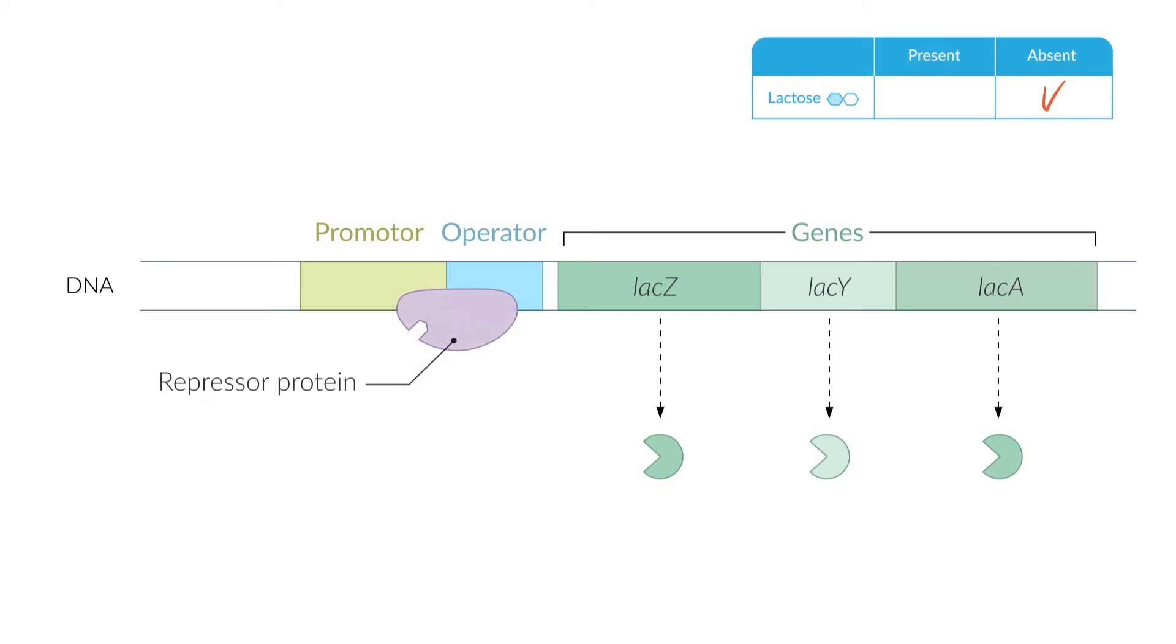In the absence of lactose, a repressor protein is bound to the LAC operator. This binding prevents transcription of the downstream LAC genes. The repressor protein is encoded by the regulatory gene LACI. LACI isn't directly part of the LAC operon, but is located a few base pairs upstream.